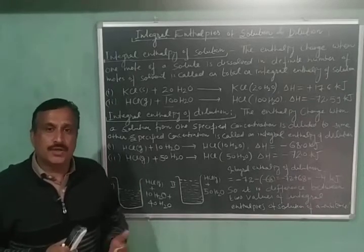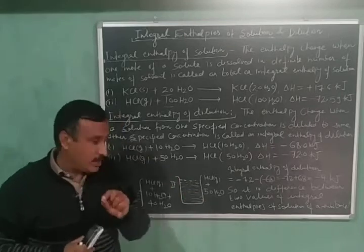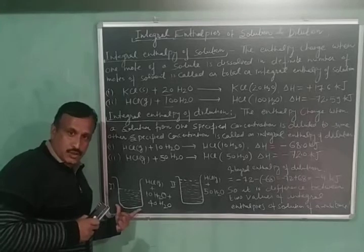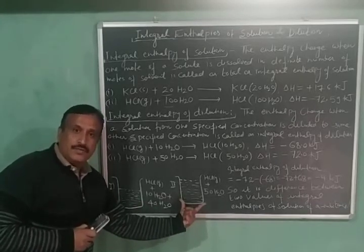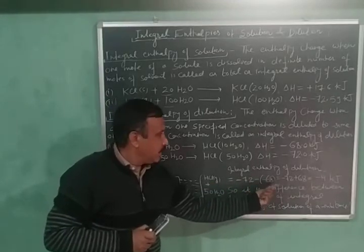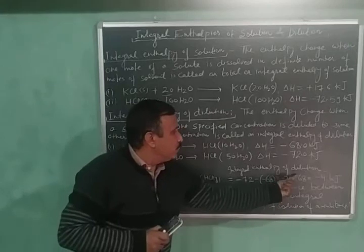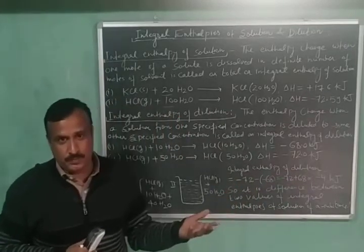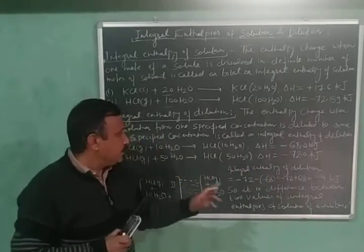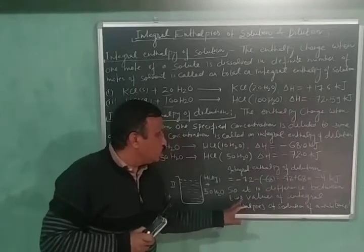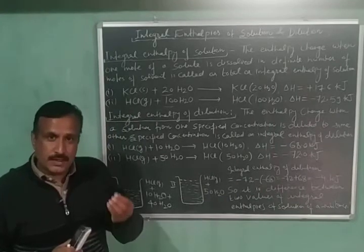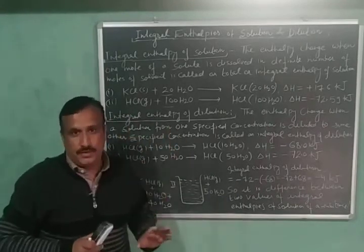We already received 68 kilojoules of heat by dissolving 1 mole of HCl in 10 moles of water, and after adding 40 more moles of water we get 4 kilojoules more, giving a total of 72 kilojoules. The integral enthalpy of dilution can be calculated simply by subtracting: minus 72 minus (minus 68) equals minus 4 kilojoules. So the integral enthalpy of dilution is simply the difference between two values of integral enthalpy of solution.